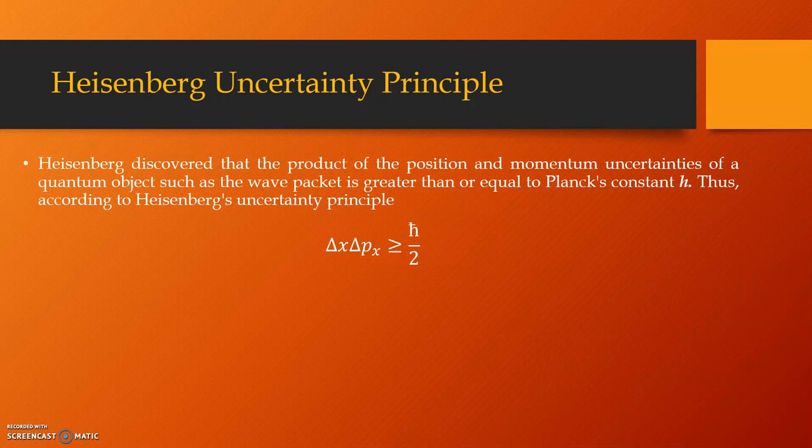Now, you must be wondering that in the earlier slides, I was talking about momentum only as p and I was talking about the uncertainty only as delta p. But, here, in this equation, you can see that I have written delta x into delta px. Let me just clarify. When we talk about position, position is a vector. So, it has three different components, one along x, one along y and the other along z-axis.